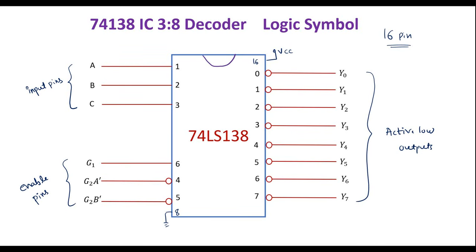In the 74138 we have 3 enable pins: G1, G2A-bar, and G2B-bar. The G1 line should always be logic 1 (high). G2A-bar should always be 0 and G2B-bar should always be 0. Only then is the 74138 IC active. Depending on the select lines or input lines, any one output line goes low while all the rest remain high — that is the meaning of active-low outputs.